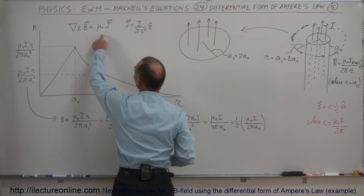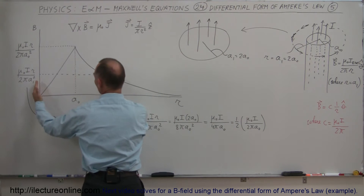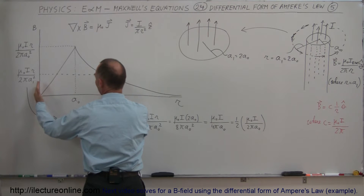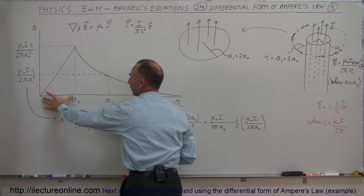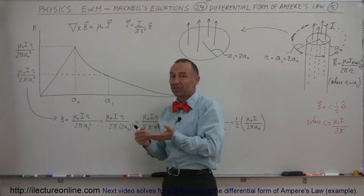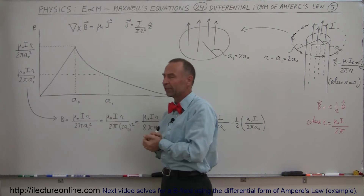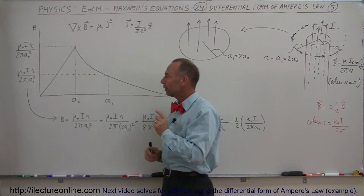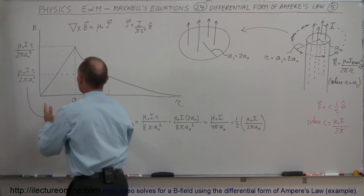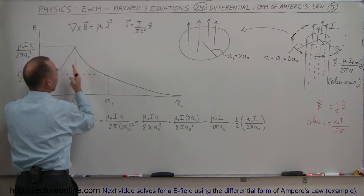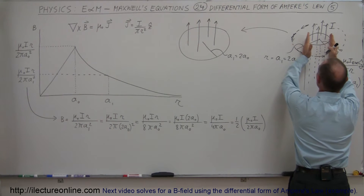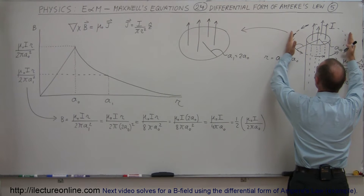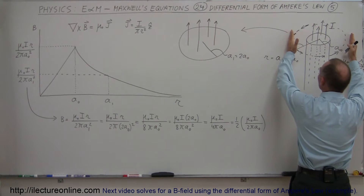The linear equation works for the region inside the current, but not for the region outside. If you try to apply it to a position away from where the current is flowing, you get the wrong answer — you actually get zero when you take the curl of the B field. Instead, you can imagine taking all the current in this region and spreading it out evenly over a greater, larger cylindrical region.